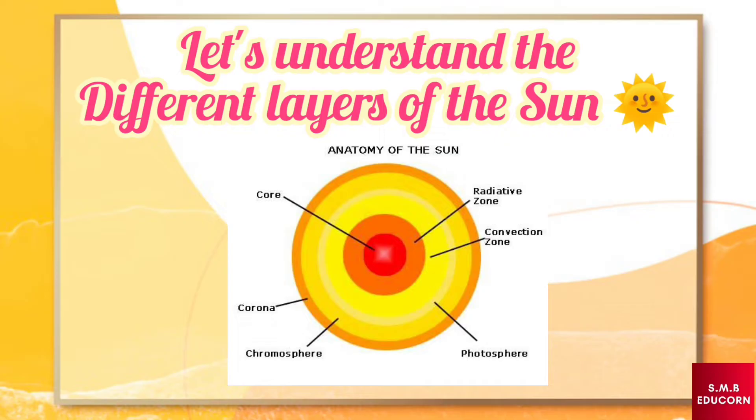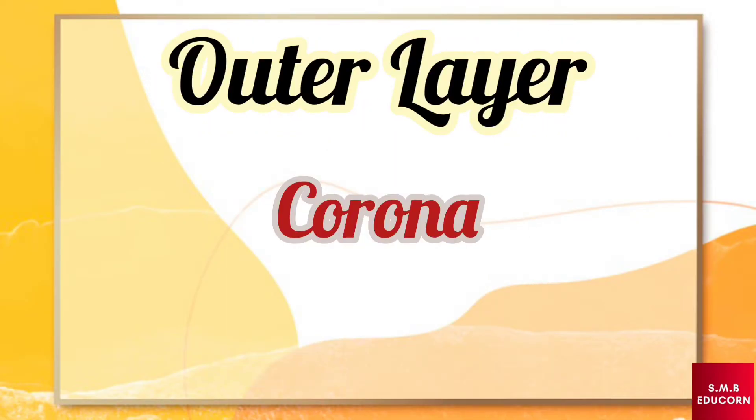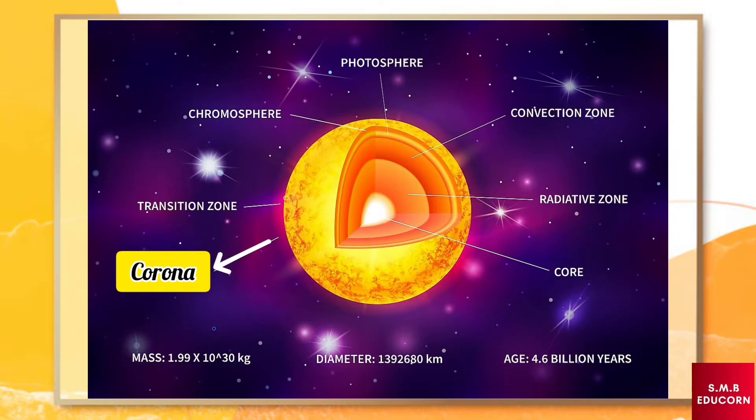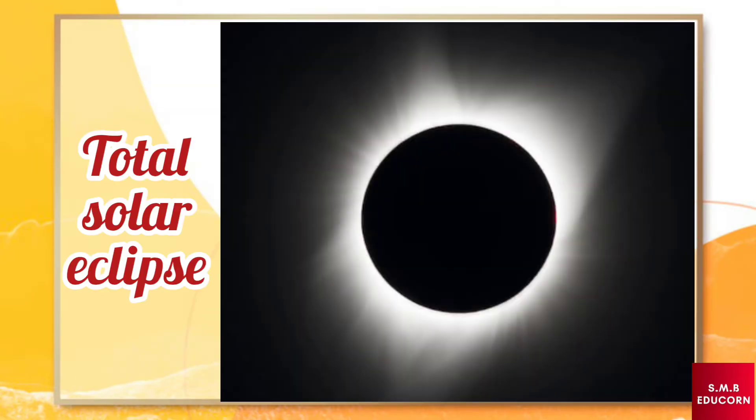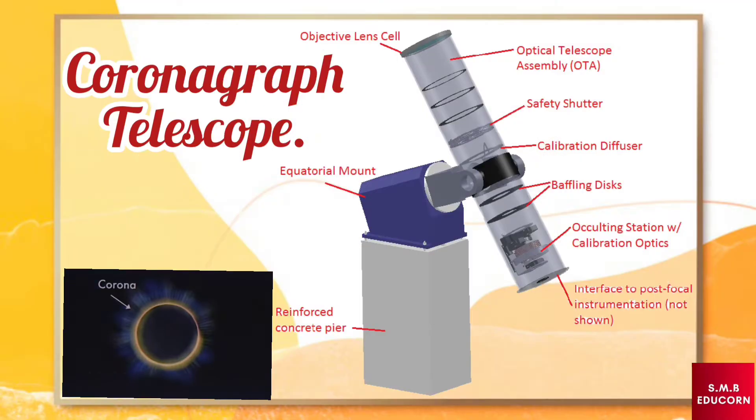Now let's have a look at the different layers of the sun. Corona, it is the outermost layer of the sun. The temperature of the layer is about 50,000 degree Celsius. This layer cannot be seen with the naked eye except during a total solar eclipse with the help of coronagraph telescope.